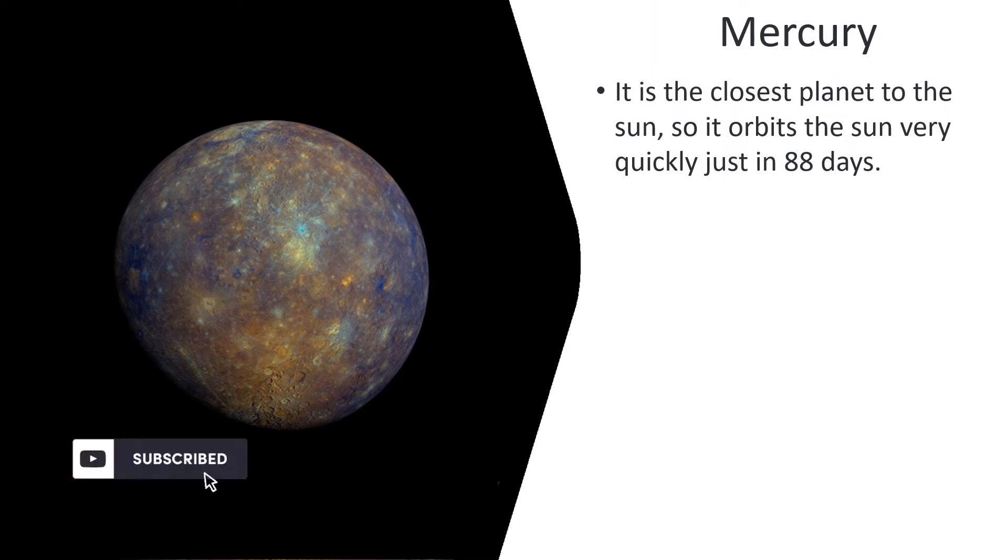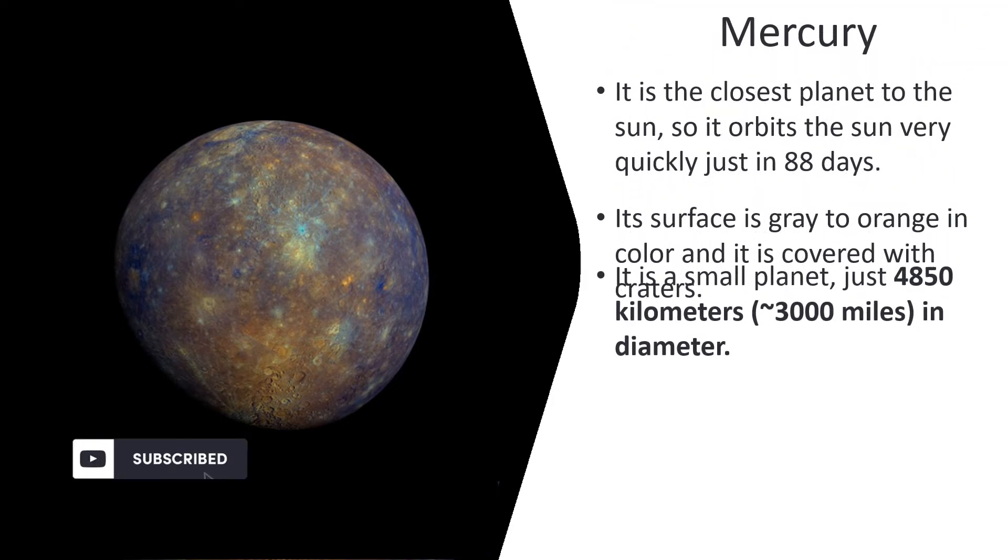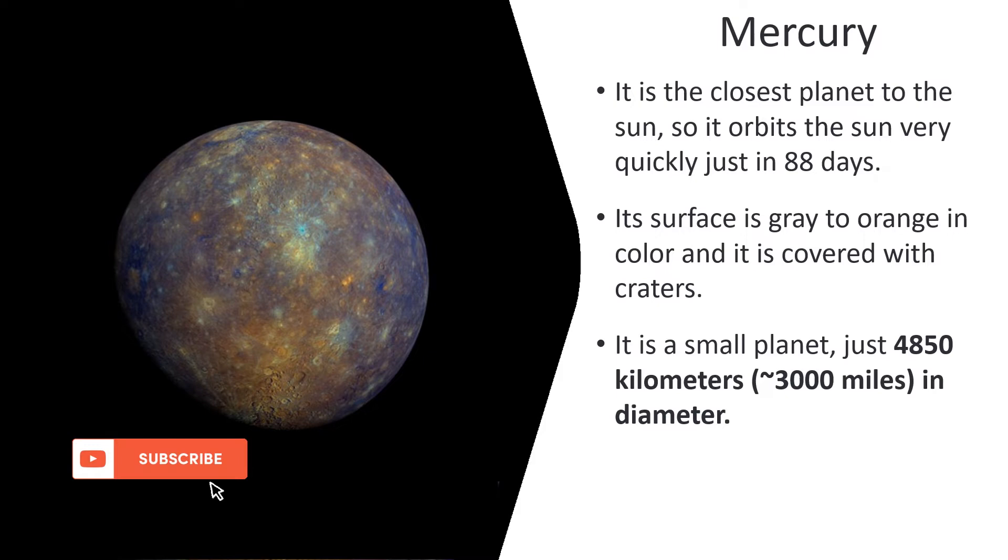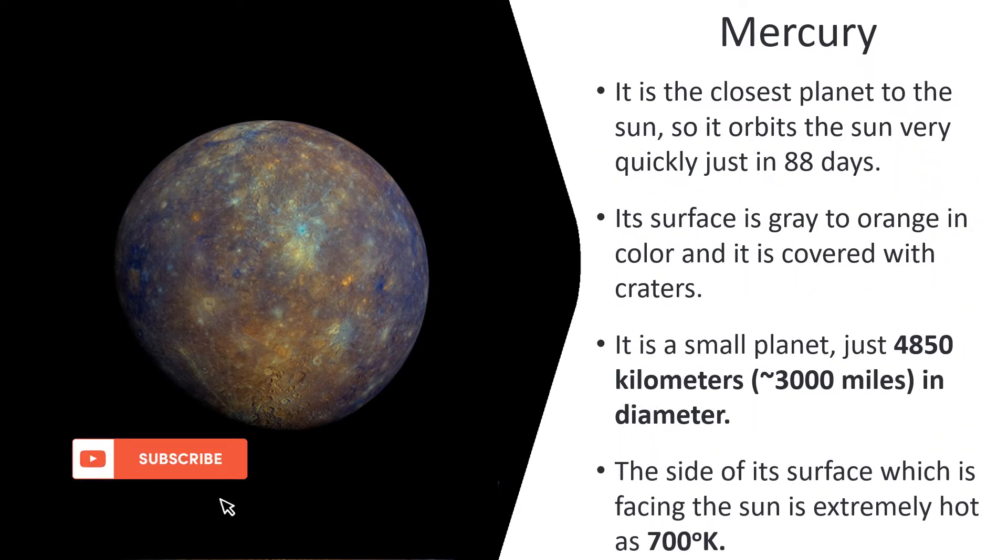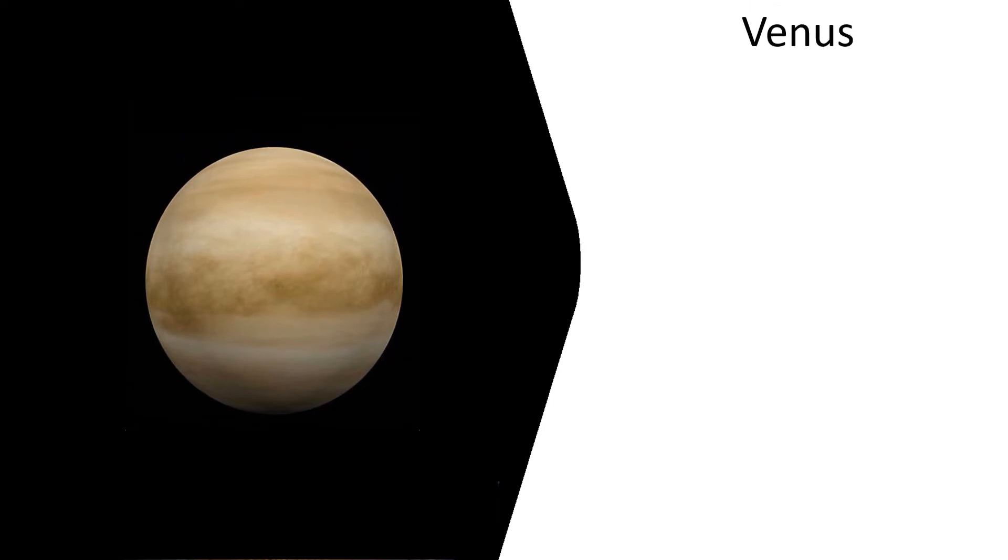Mercury. It is the closest planet to the Sun, so it orbits the Sun very quickly, just in 88 days. Its surface is gray to orange in color and it is covered with craters. It is a small planet, just 4,850 kilometers or 3,000 miles in diameter. The side of its surface which is facing the Sun is extremely hot, as high as 700K.